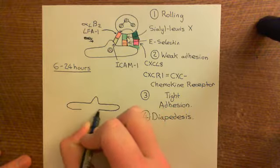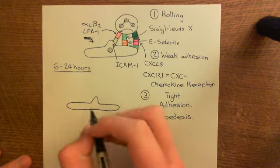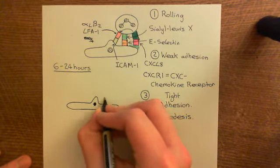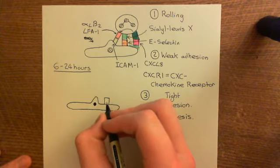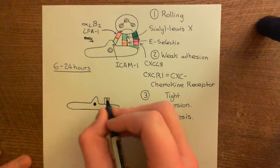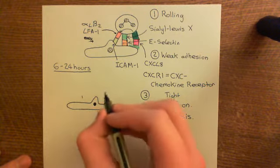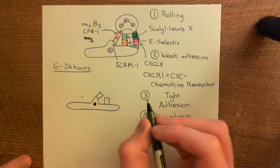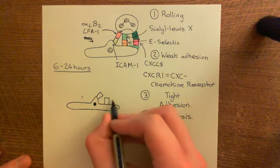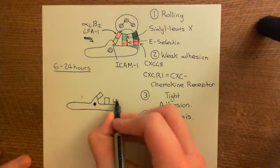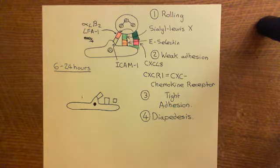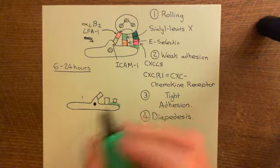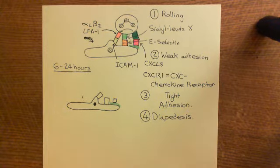They start producing VCAM1, and they're also going to start producing more ICAM1. They're also going to produce another chemokine known as CC ligand 2, CCL2, which again is going to be mounted on heparan sulfate proteoglycans of the glycocalyx.